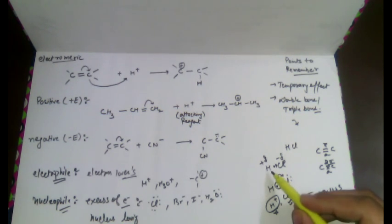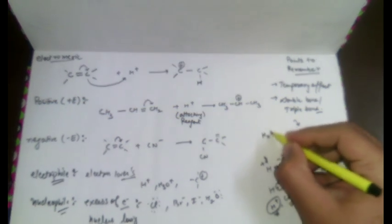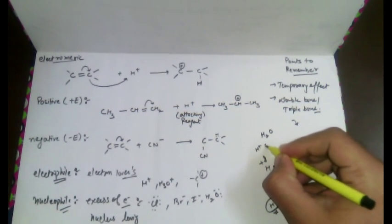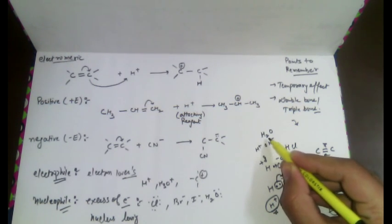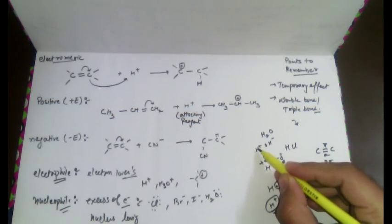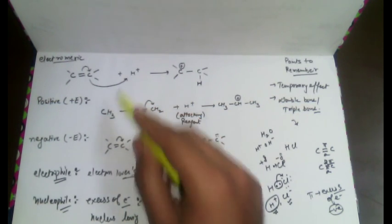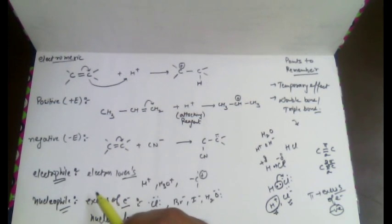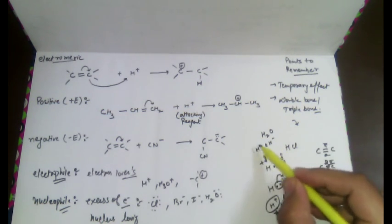It is not always necessary to take HCl as an example. We can take H₂O as well. H₂O can be written as H⁺ and OH⁻. Here, OH⁻ is acting as a nucleophile and H⁺ is acting as an electrophile. So, electrophiles and nucleophiles can be obtained from any compound. H⁺ here acts as the attacking reagent.